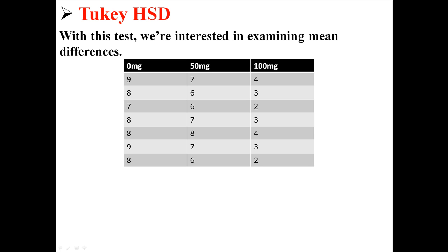So the Tukey HSD, HSD means honestly significant difference. Now with this test, we're interested in examining mean differences. So these are our three groups: 0mg, 50mg, and 100mg. We're going to calculate the mean for each group. So the mean for the 0mg group is 8.14, for the 50mg is 6.71, and for the 100mg is 3. That's just the mean, we already know how to do that.